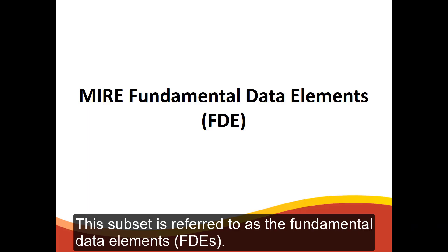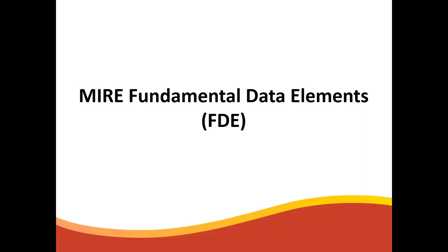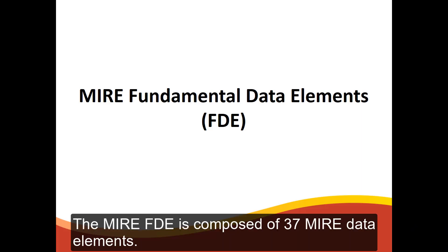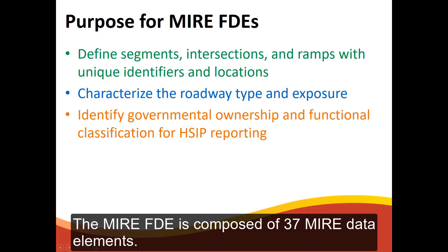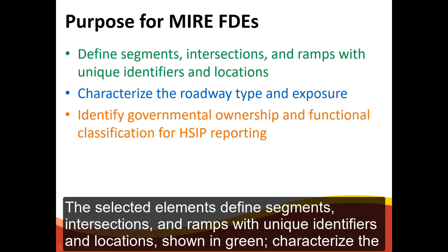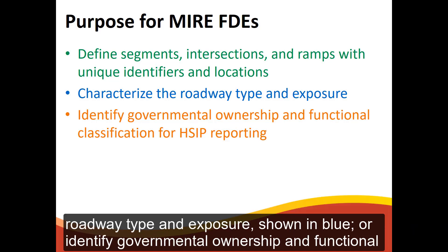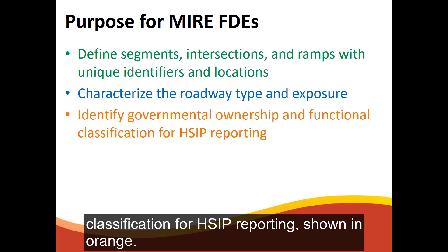This subset is referred to as the Fundamental Data Elements, FDEs. The MIRE FDE is composed of 37 MIRE data elements. The selected elements define segments, intersections, and ramps with unique identifiers and locations — shown in green — characterize the roadway type and exposure — shown in blue — or identify governmental ownership and functional classification for HSIP reporting — shown in orange.